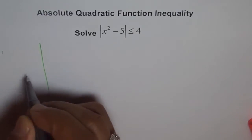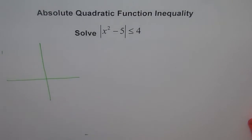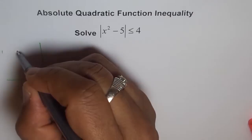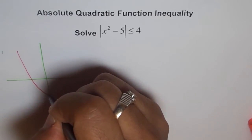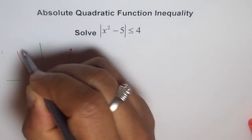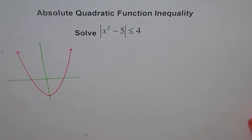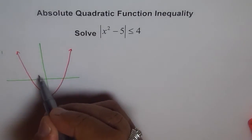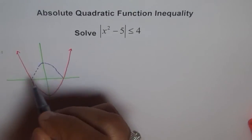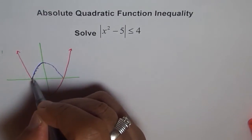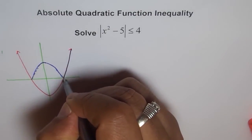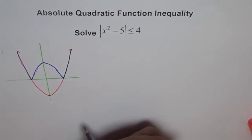Let's make a neat sketch using a coordinate system. First, let's sketch x² - 5. This parabola has a vertex at -5. To take the absolute value of it, we need to flip the negative portion — so the negative part flips up, and the positive part remains the same as x² - 5.